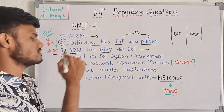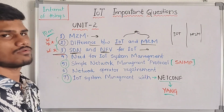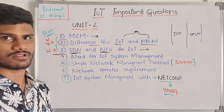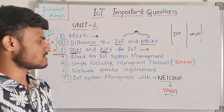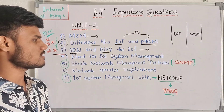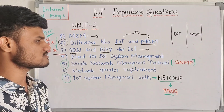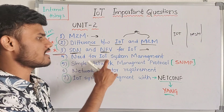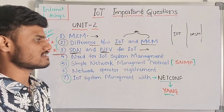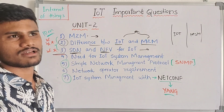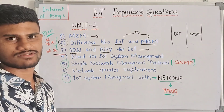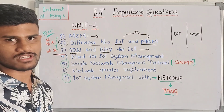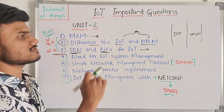There are five questions in the second unit. Also, need of IoT system management, and there are normal side headings. Normally use the third one — maximum three questions.